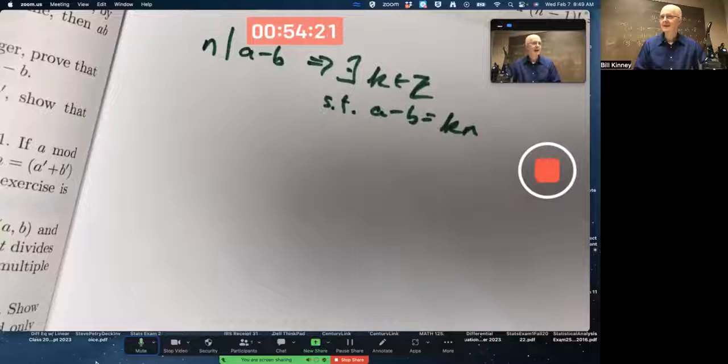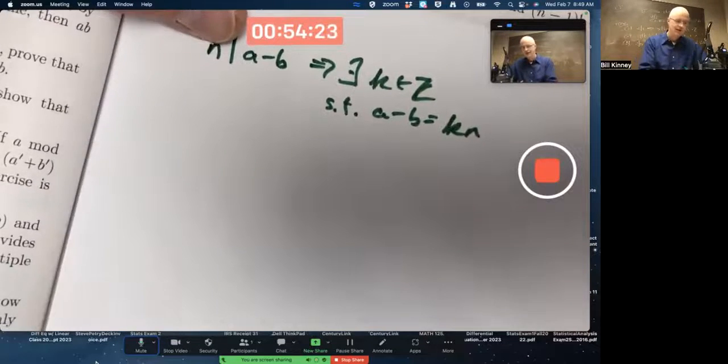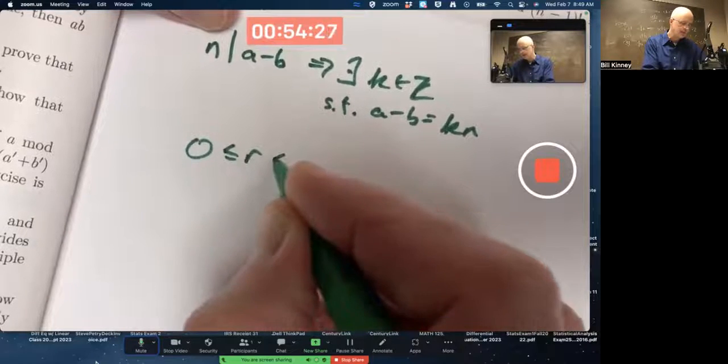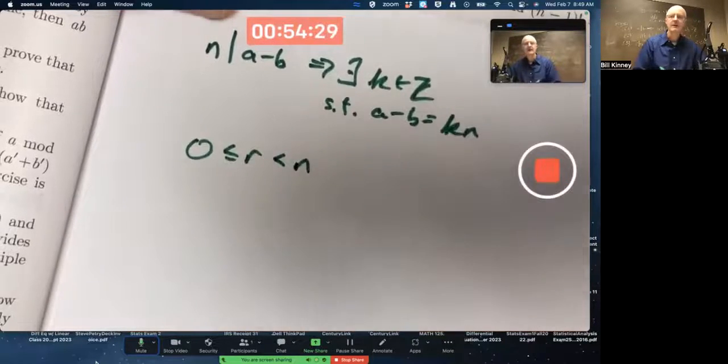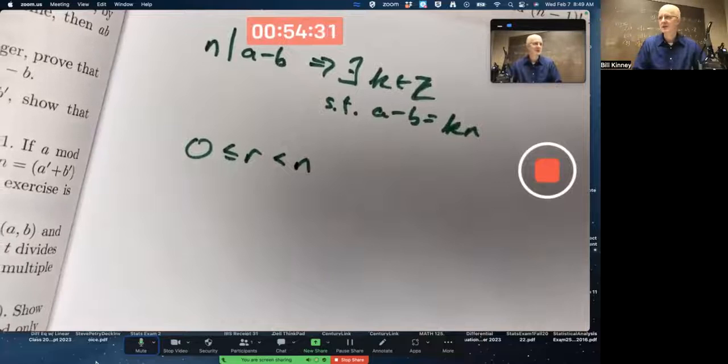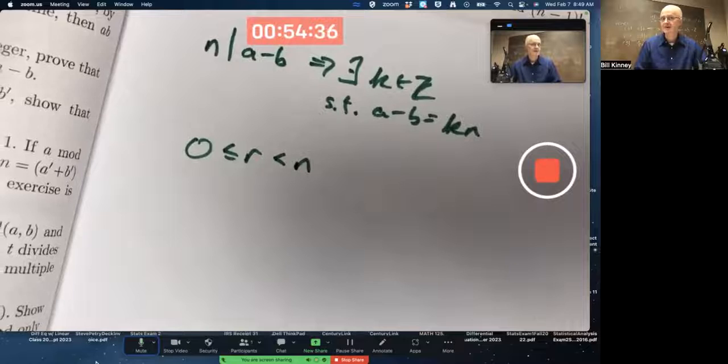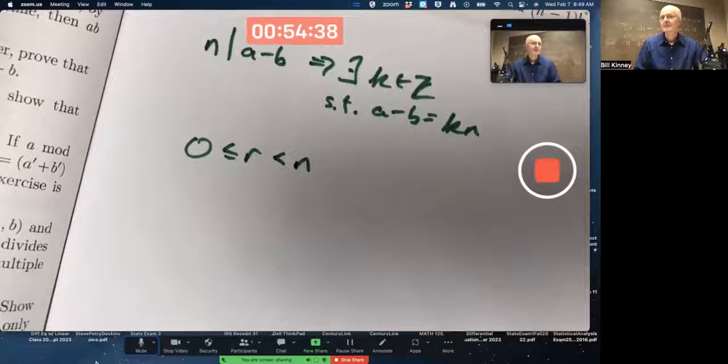You do need to use the fact that the remainder will be between 0 and N, possibly be equal to 0 but not equal to N. That will be necessary to use in some way. Both remainders, in fact, that you're trying to show are equal will satisfy that condition. That'll be part of the proof.